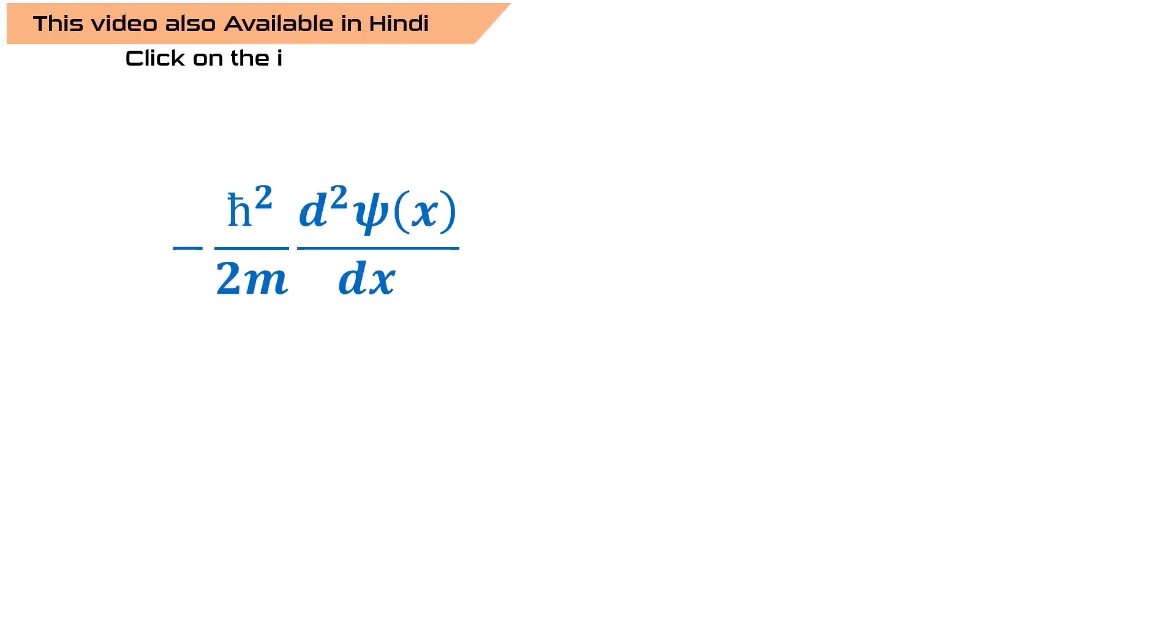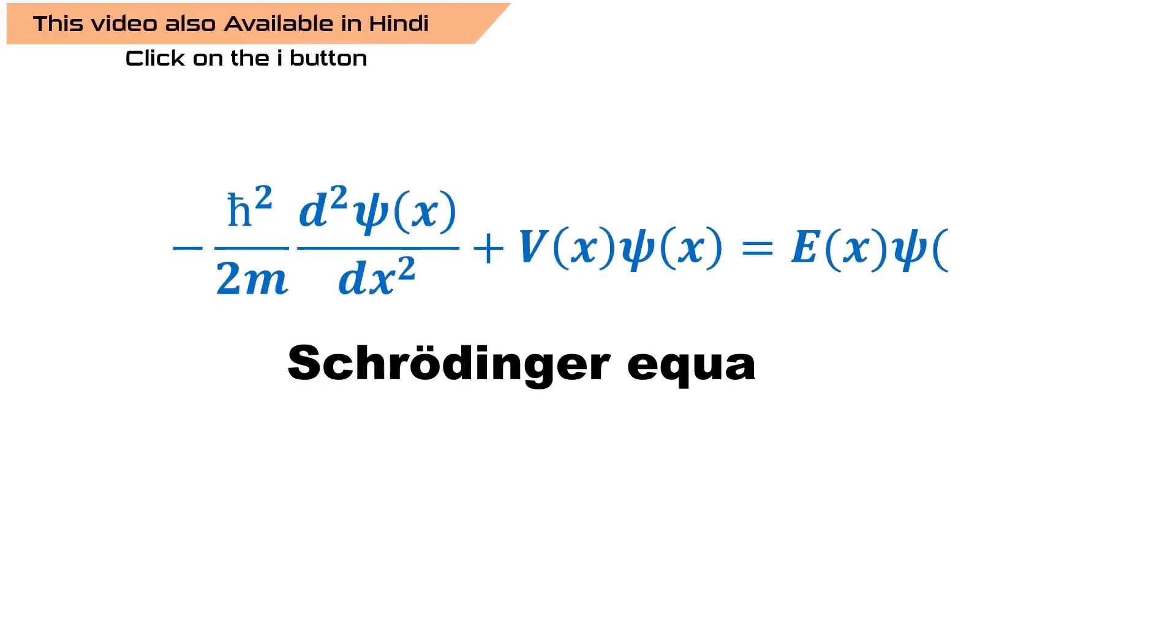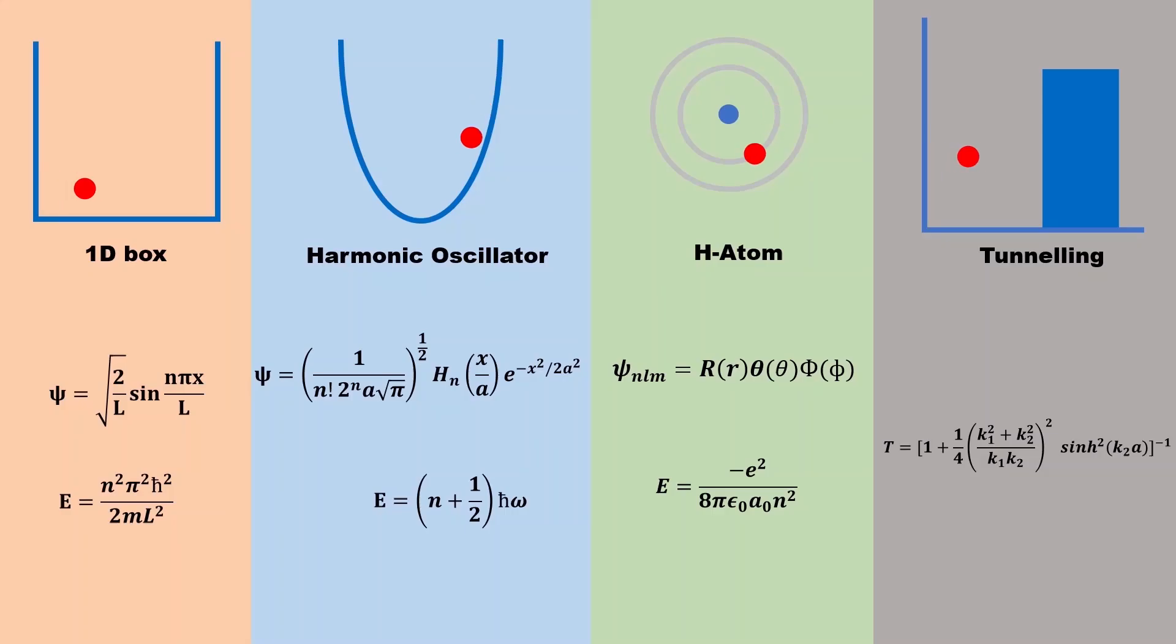In quantum physics, the Schrödinger equation is used for potential systems or particles that give an exact solution, such as particle in 1D box, simple harmonic oscillator, hydrogen atom, or tunneling through a rectangular barrier. These are idealized systems that give exact solutions.